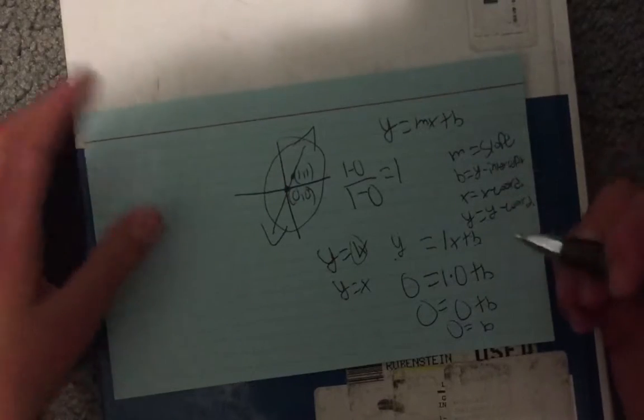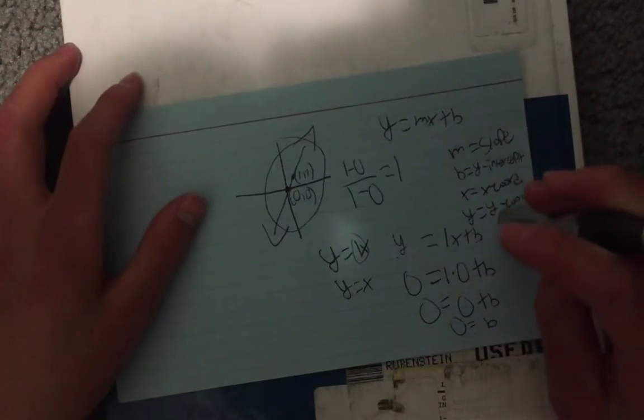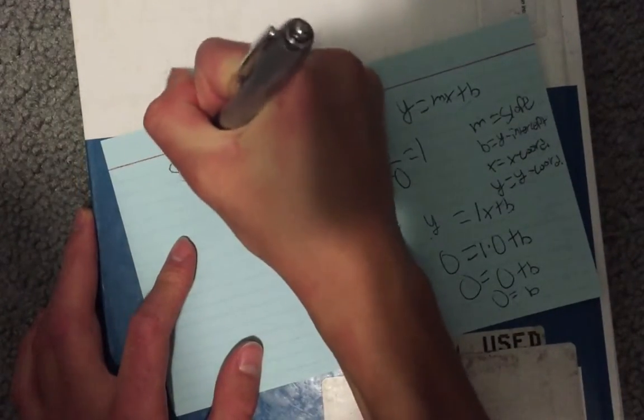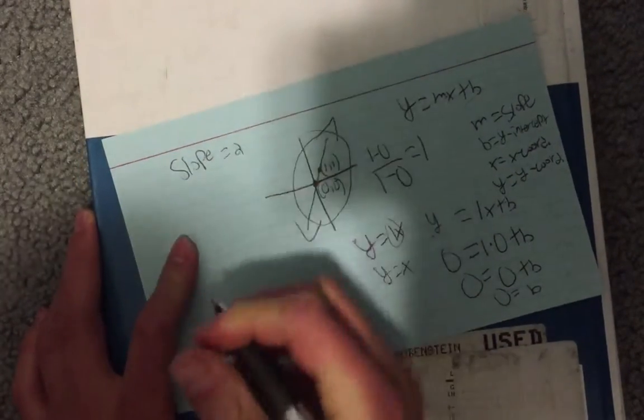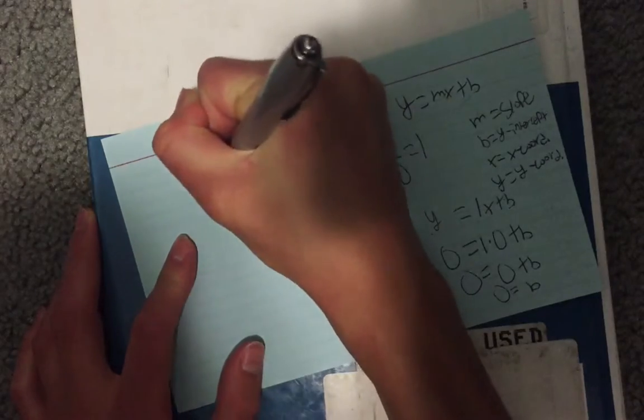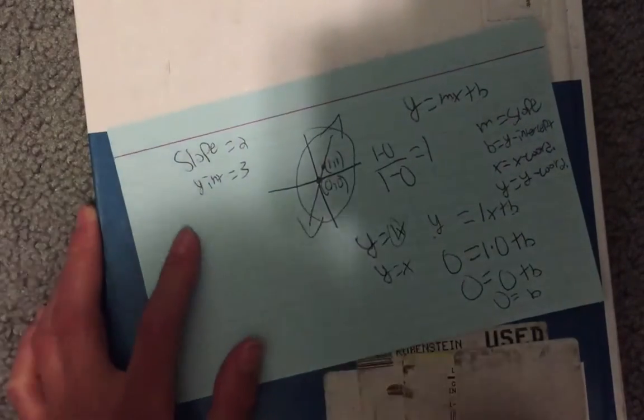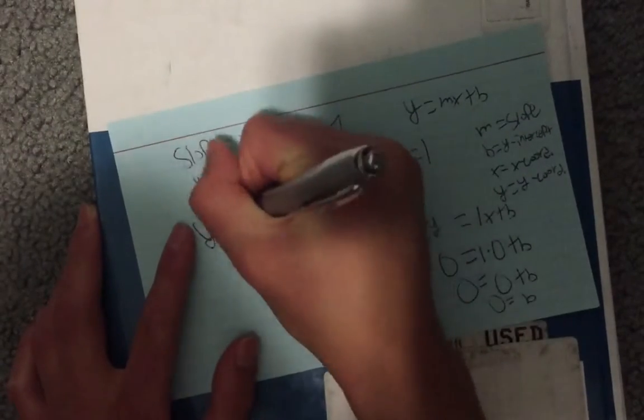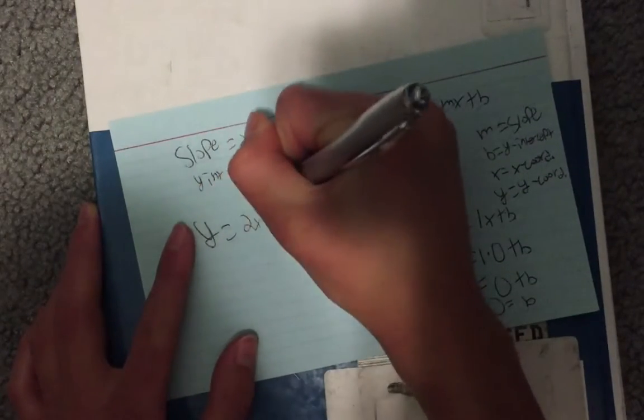So let's see. What if they say the slope is two and the y-intercept equals three? Write the equation. That's just straightforward. Y equals two x plus three.